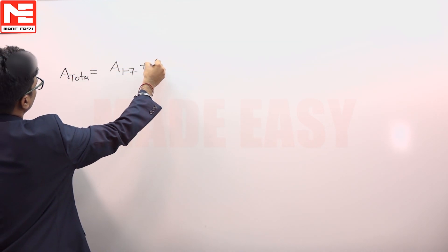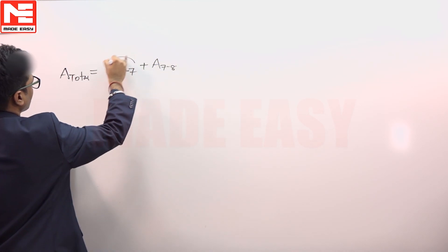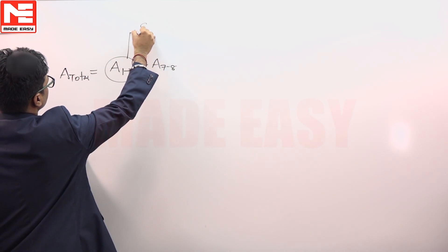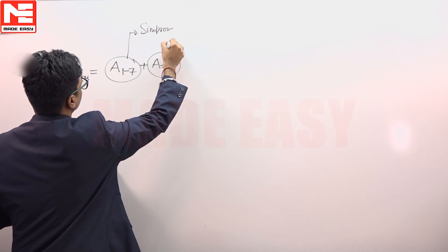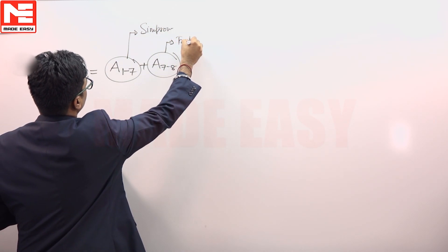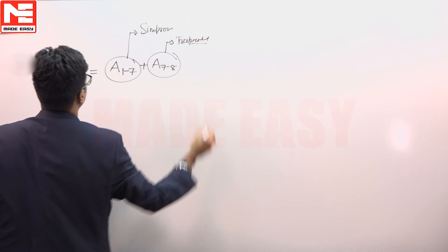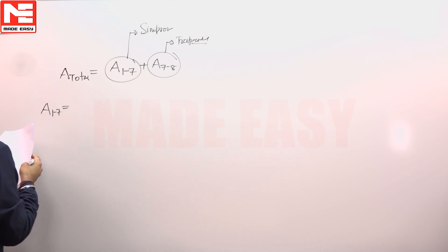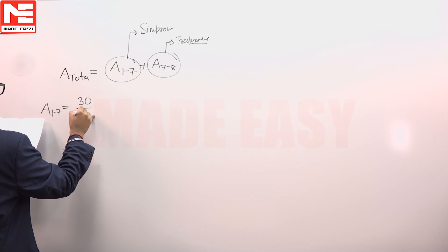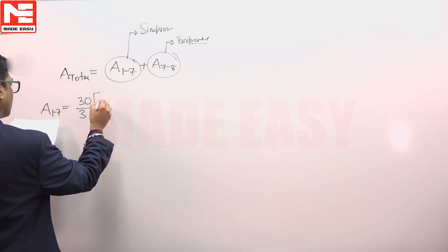This by Simpson's and this by trapezoidal. So we can write A 1 to 7, and this is equal to 30 meter interval given, so 30 upon 3, we can write.